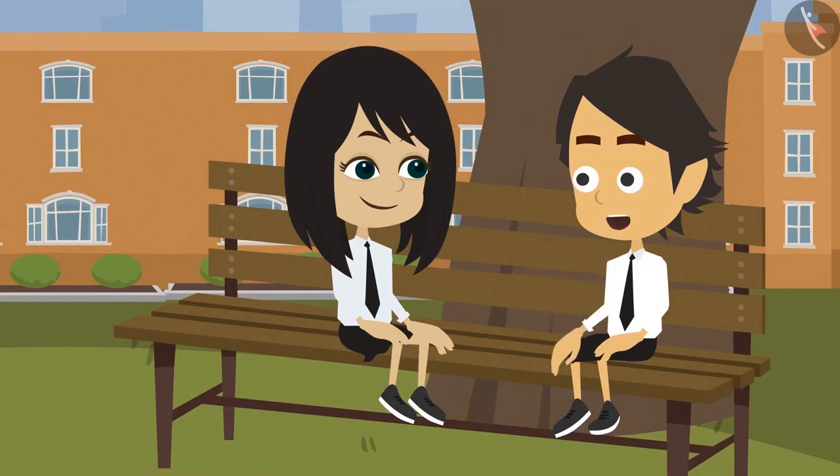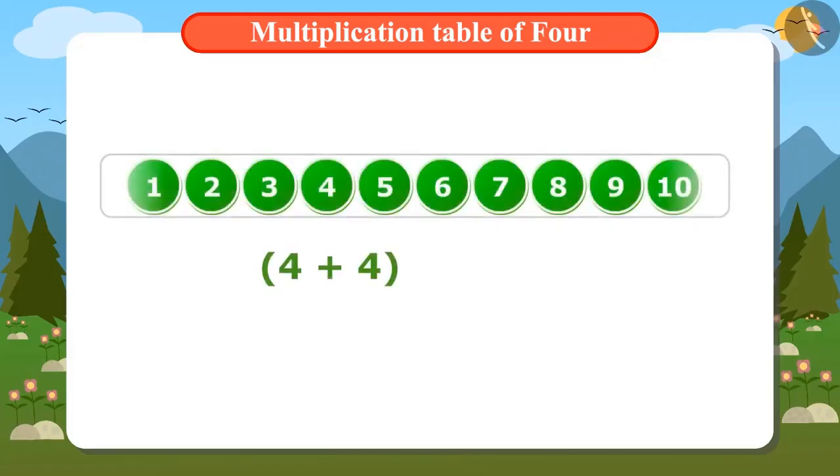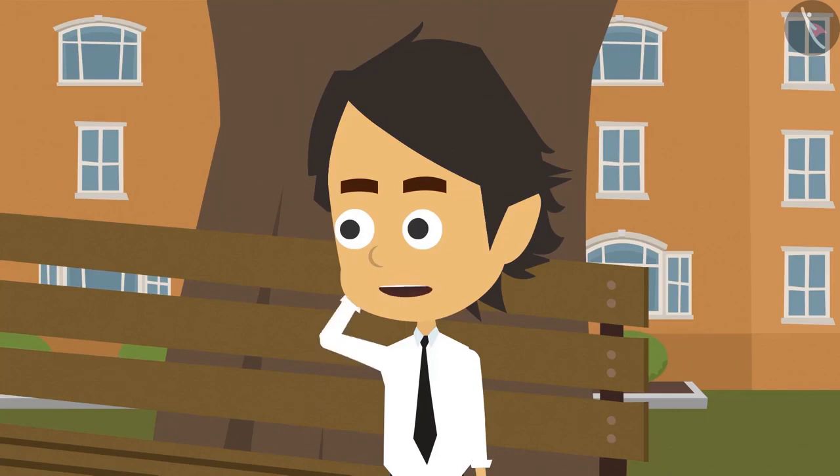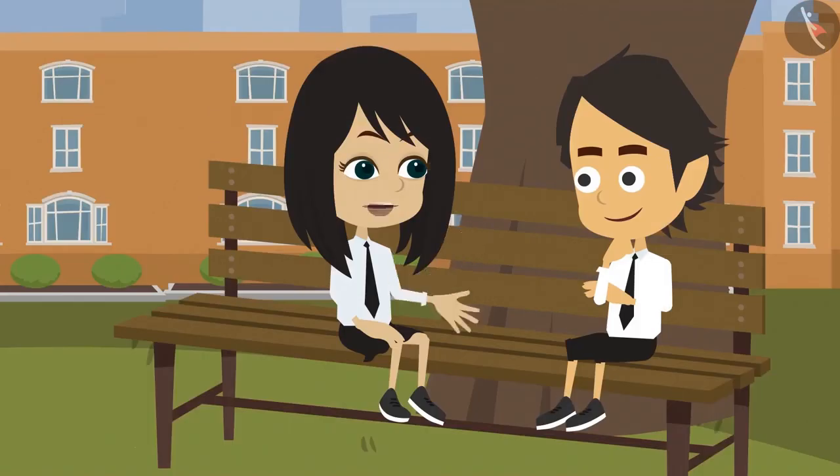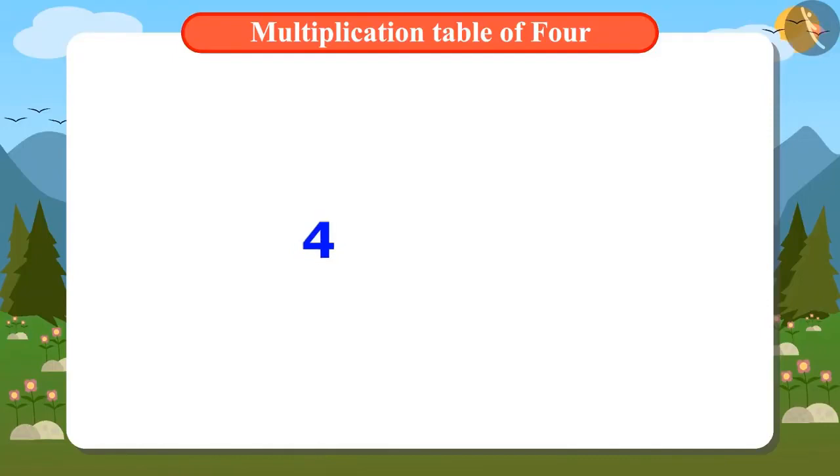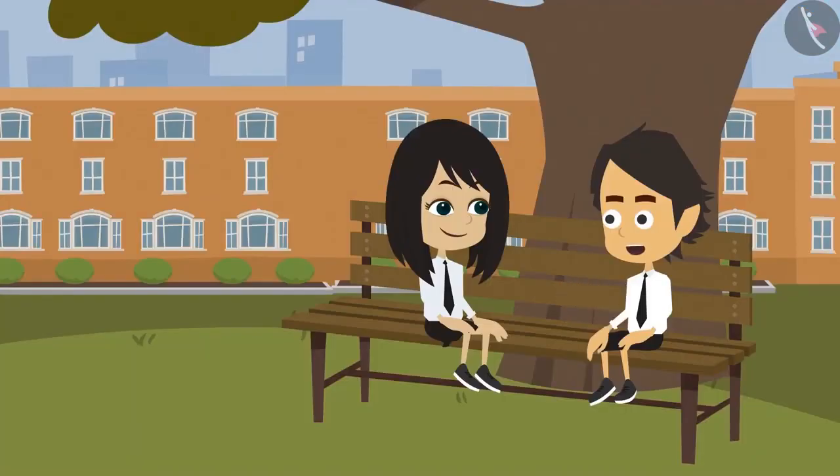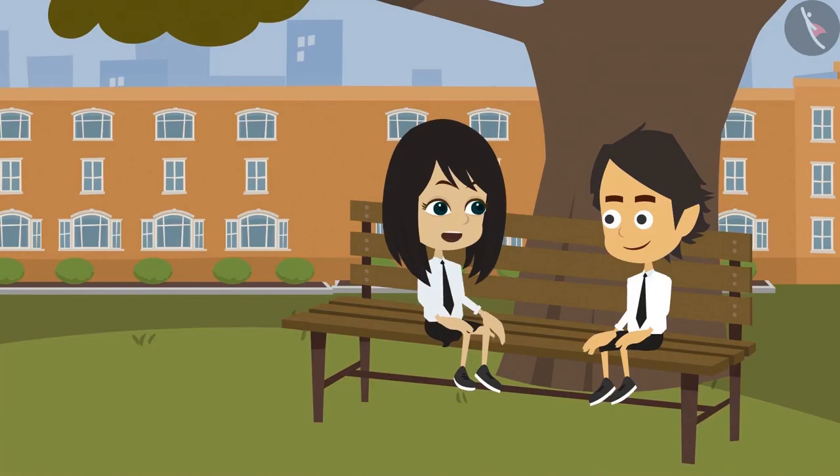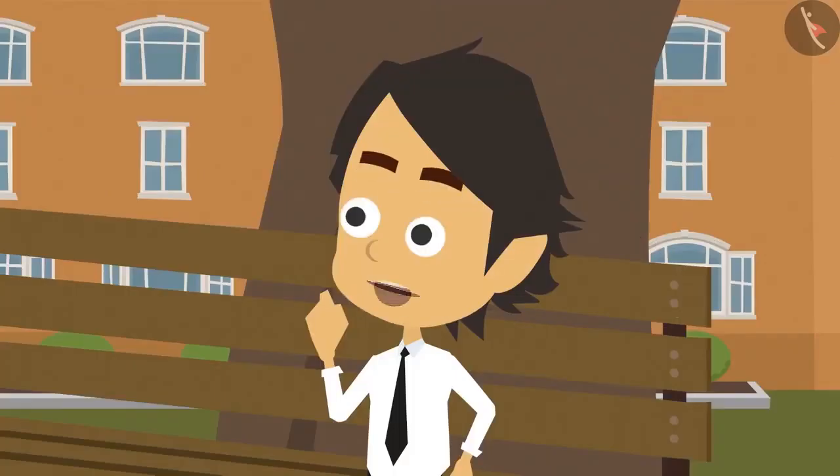But how do we write it? It is very easy. Keep adding 4 again and again, or keep leaving 4 numbers and count them. I don't understand. Look, to know the first number in multiplication table of 4, we will multiply 4 by 1. For that, we have to add 4 only once. The answer will be 4. If we add any number once, we get the same number.